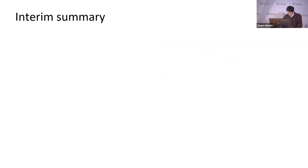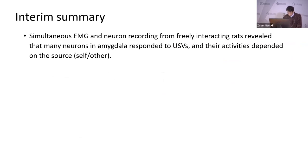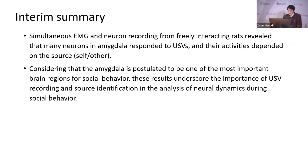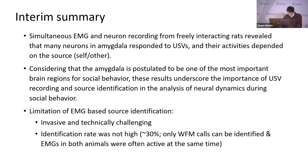This slide summarizes the use of EMG. We could discriminate some USVs based on EMG activities and found many neurons in amygdala respond to USVs, with their activity depending on the source. Considering that the amygdala is posited as one of the most important brain regions for social behavior, these results underscore the importance of USV recording and source identification in neural dynamics. However, there are limitations: it is invasive, technically difficult, and the ratio of identified calls was around only 30% of total vocalizations in this study.